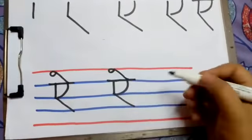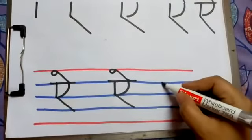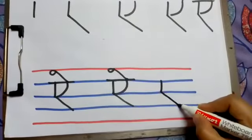Make one small standing line, then a slanting line, a curve, one more slanting line towards upward and rotate.